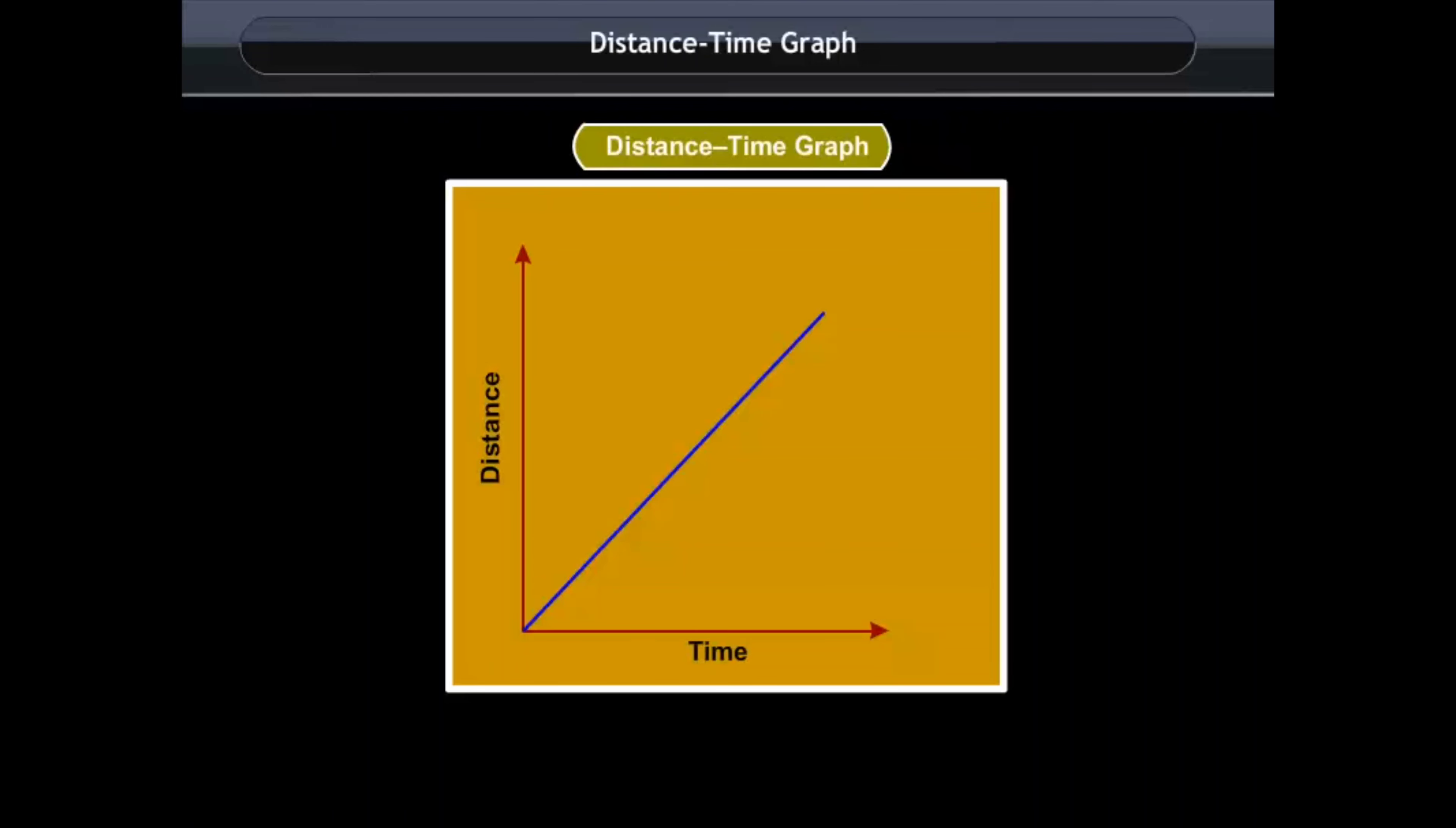The distance time graph of a body moving in uniform motion is always a straight line.